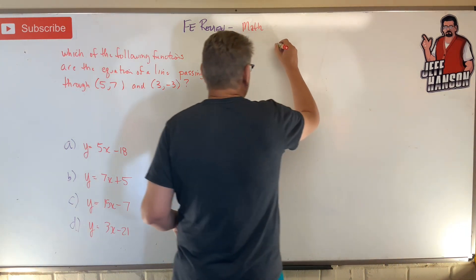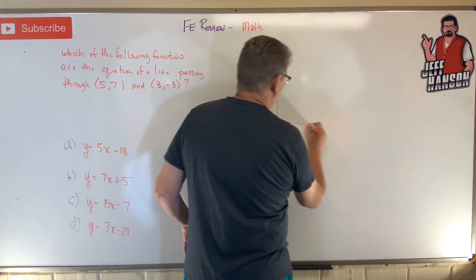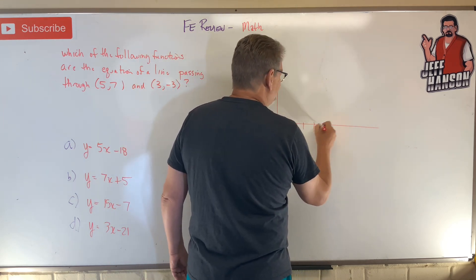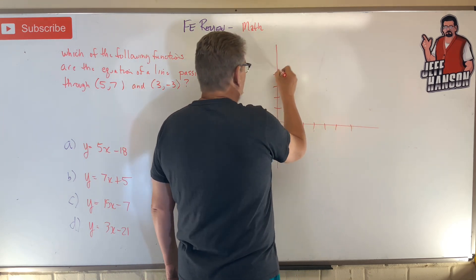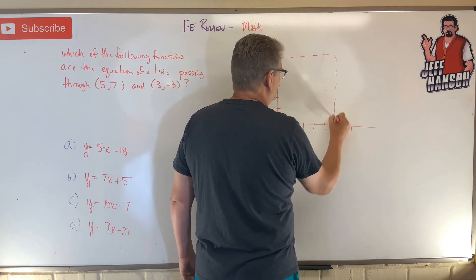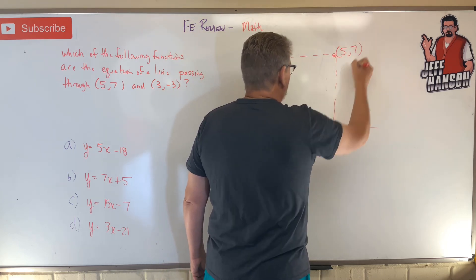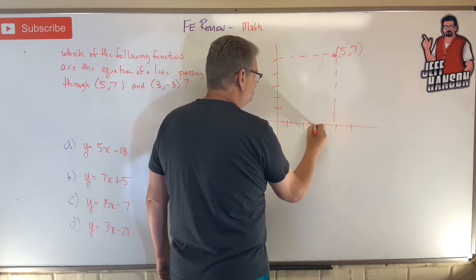Number one way is this: just real quickly plot this out here. So up here, I've got a point that's (5,7), and then over here I've got a point that's (3,-3).